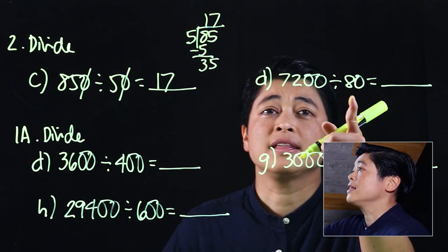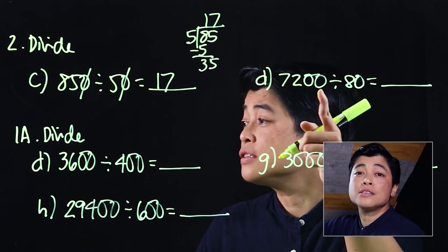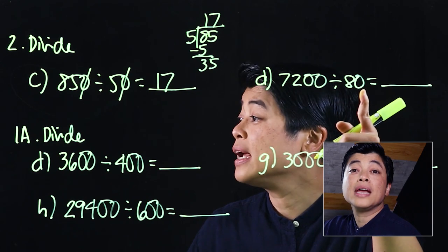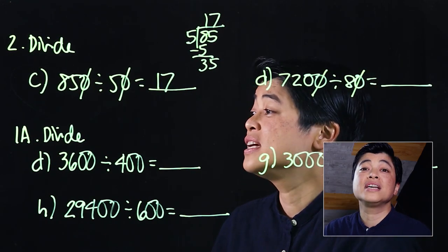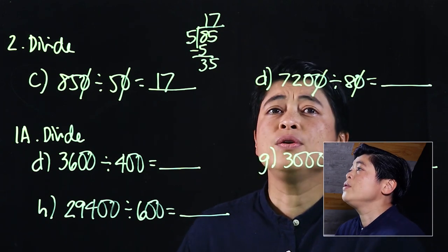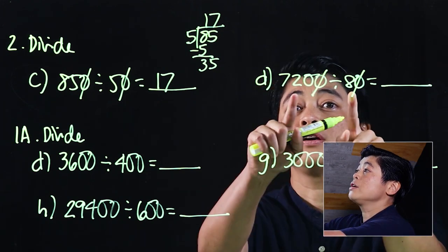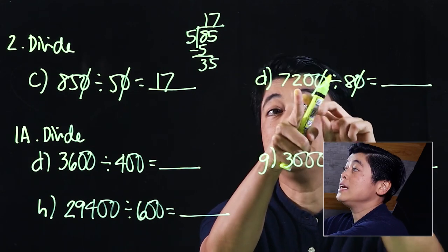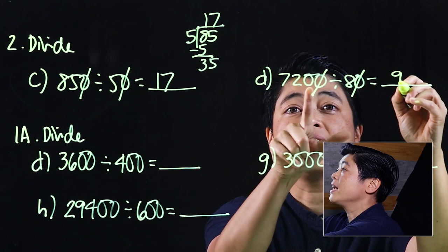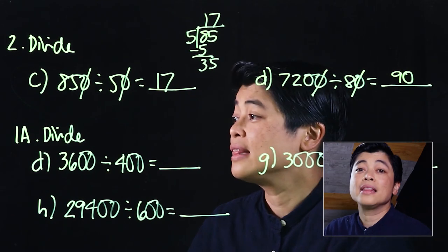If we look at the next problem, here there's two zeros, but there's only one zero on 80. Therefore, we can only cancel one of the zeros. Now if you can do it mentally, which theoretically you should, because 72 divided by 8 is 9, but we have an extra zero making it 90.